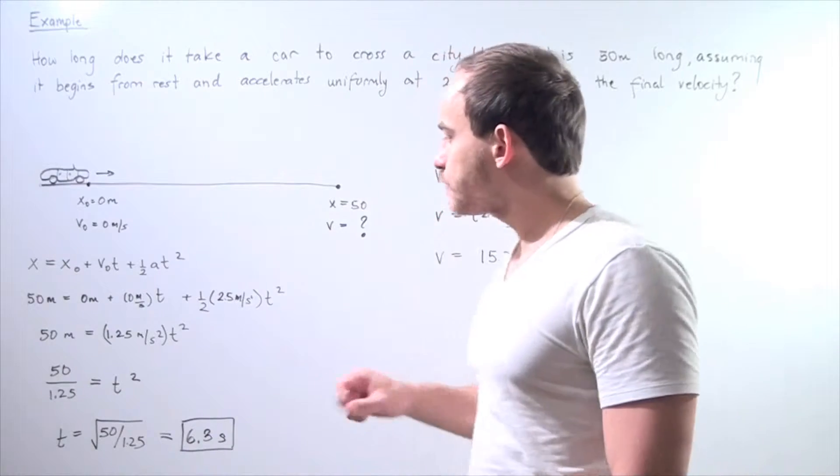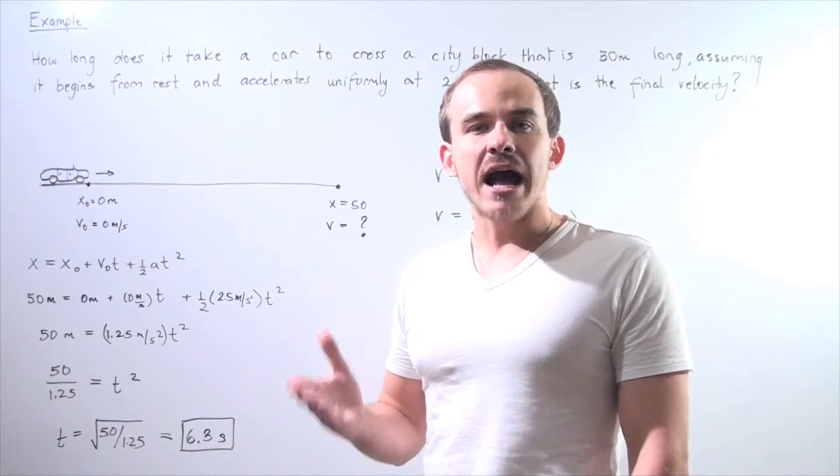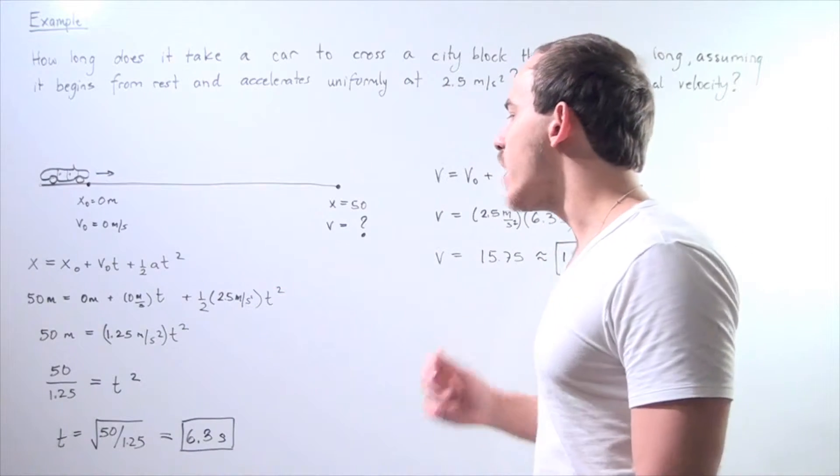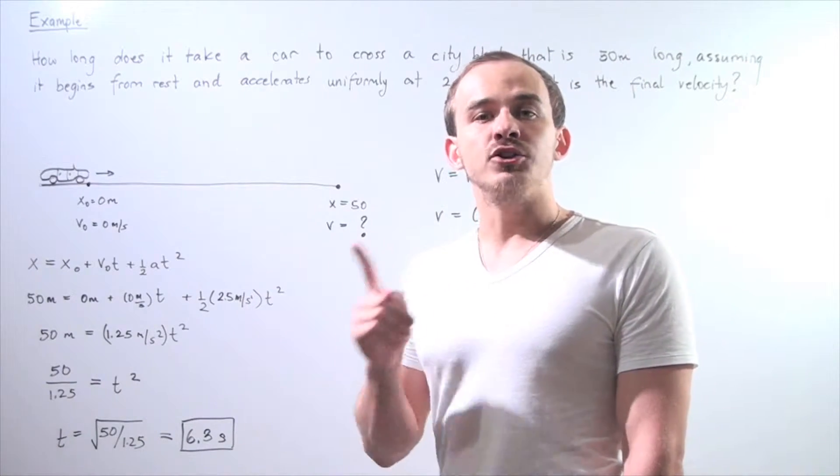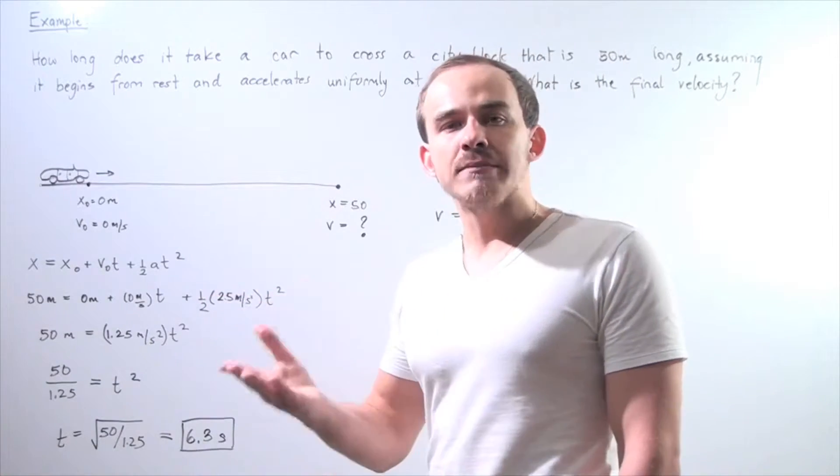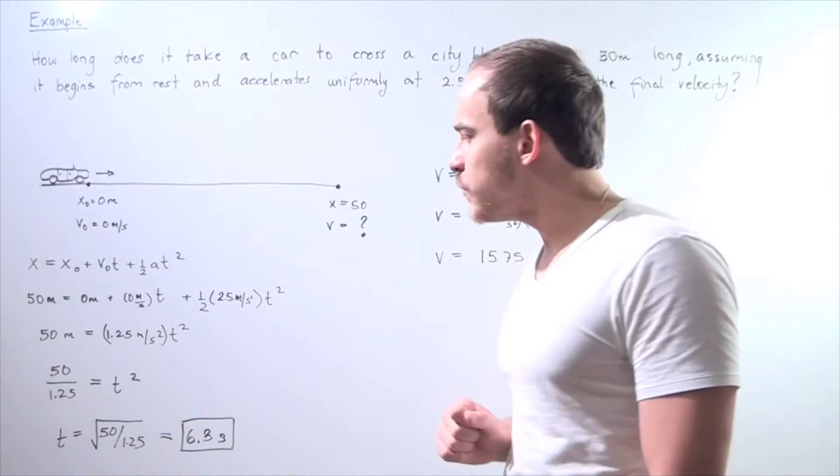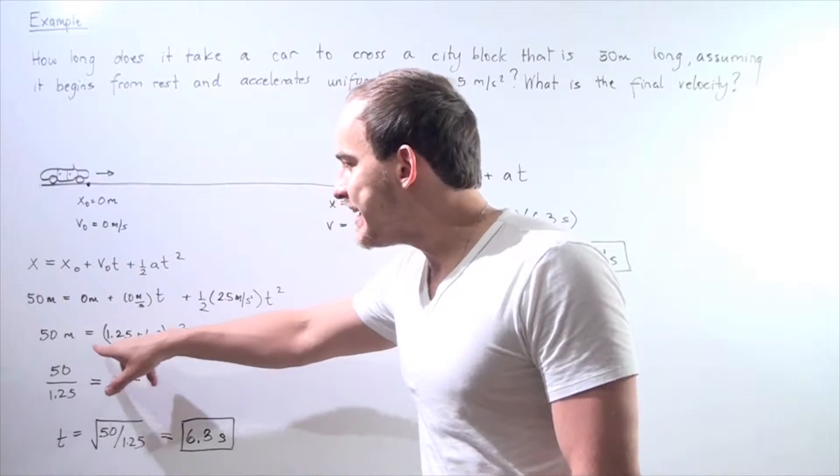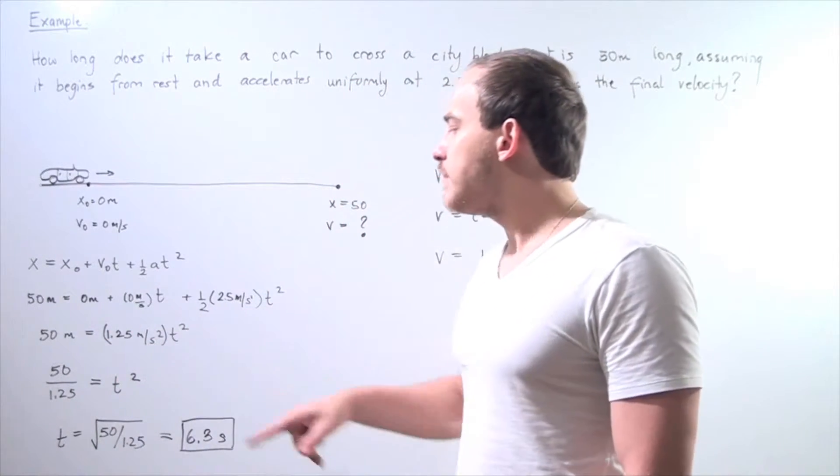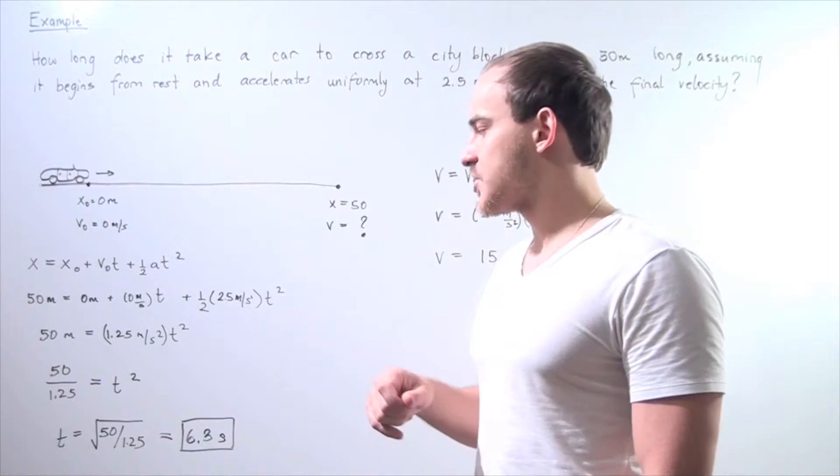50 meters equals 1 half times our constant acceleration of 2.5 meters per second squared multiplied by our unknown time squared. So, 1 half times 2.5 is 1.25. So 50 meters equals 1.25 meters per second squared multiplied by our time squared.